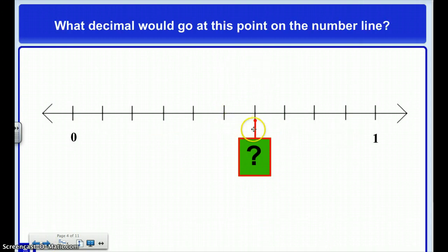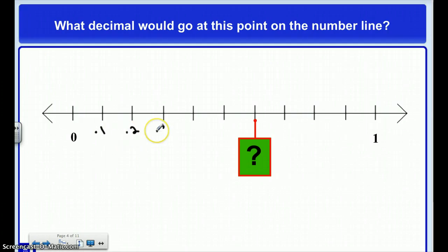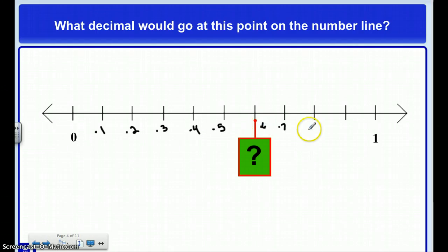Next, what decimal would go here? So if this is 1 tenth, 2 tenths, 3 tenths, 4 tenths, 5 tenths, this should be 6 tenths, 7 tenths, 8 tenths, and 9 tenths. So this is going to be 6 tenths.